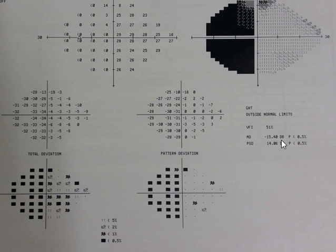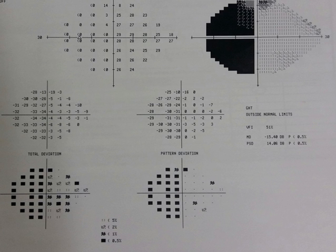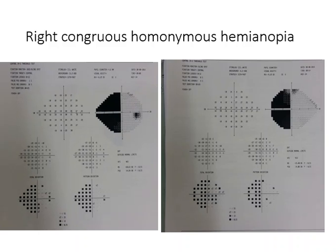The global indices used are mean deviation, pattern standard deviation, and the visual field index. The glaucoma hemifield test is one of the tests used in assessing glaucoma, but this is generally not useful in neurological field tests.